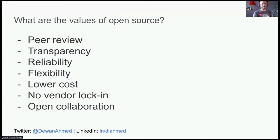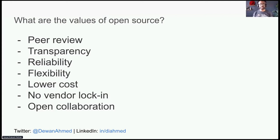With open source, there is no vendor lock-in. Freedom for the user means you can take that open source code anywhere and use it for anything at any time. And lastly, the existence of active open source communities means that you can find help, resources, and perspectives that reach beyond one interest group or one specific company. Open collaboration is one of the core essences of open source projects and communities.